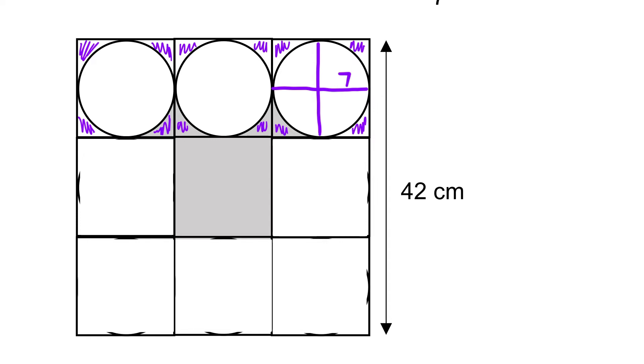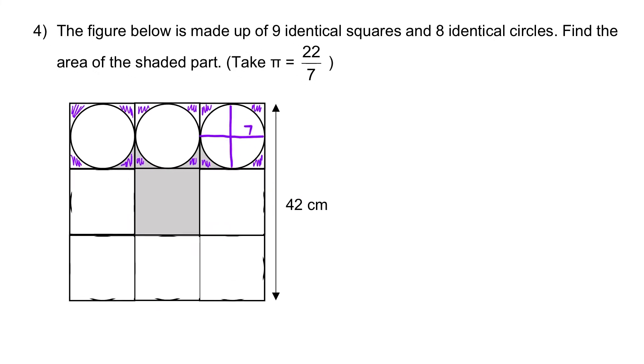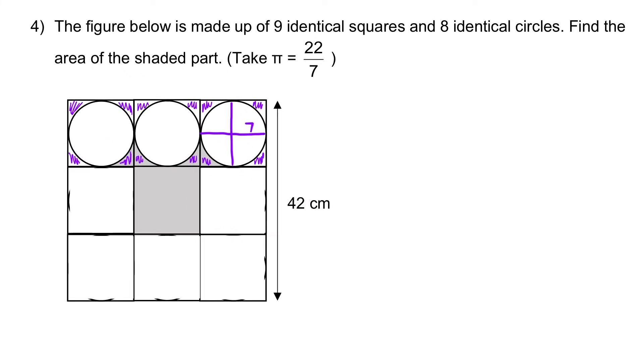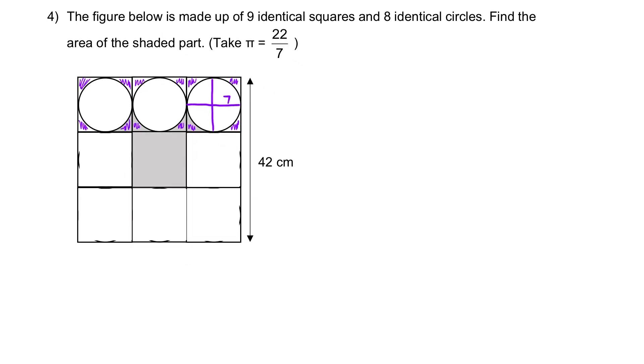Okay, so let's start. First step, let's find out the area of the figure, which is the entire big square: 42 times 42. And that is 1,764 cm squared.